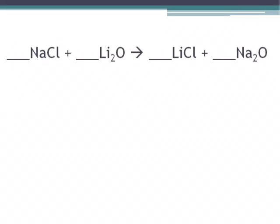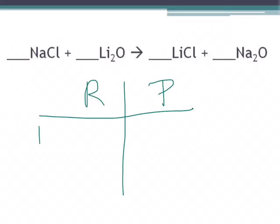Let's look at this first example. We have sodium chloride plus lithium oxide giving us lithium chloride and sodium oxide. In general, we want to make a chart that has our reactant side and our product side, and then we're going to count up our atoms. We have sodium first — on the reactant side, which is the left side, we have one sodium. On our product side, we have two.